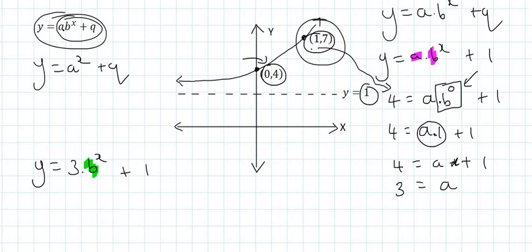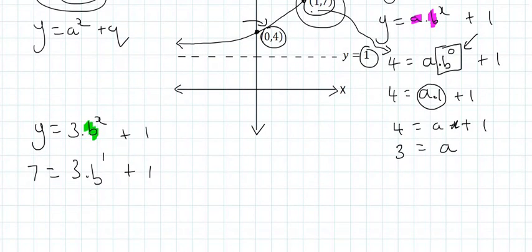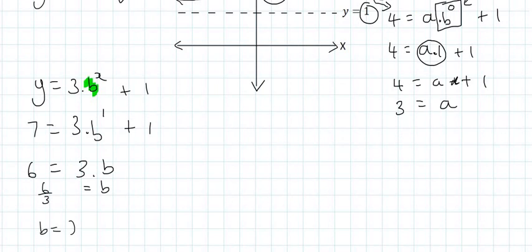So now we're going to substitute the point 7 in Y, and the x value is 1, because I'm substituting the point 1 and 7. And so I'm going to take that 1 over to the left hand side, where it becomes 7 minus 1, which is just 6. B to the power of 1 is just B. And then to get B alone, you're just going to say 6 divided by 3. And that means B is equal to 2.